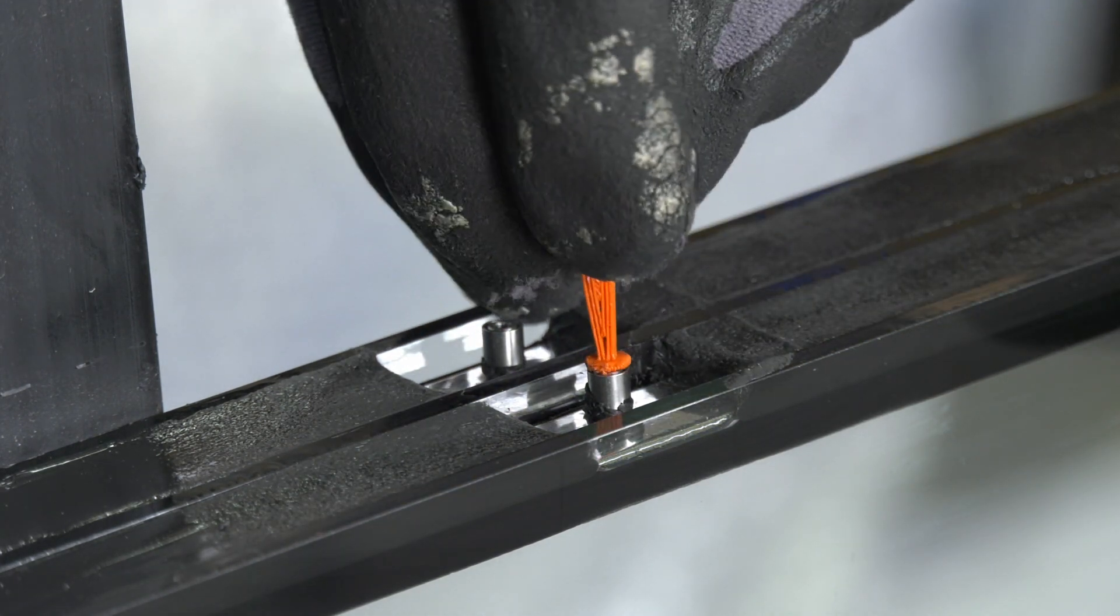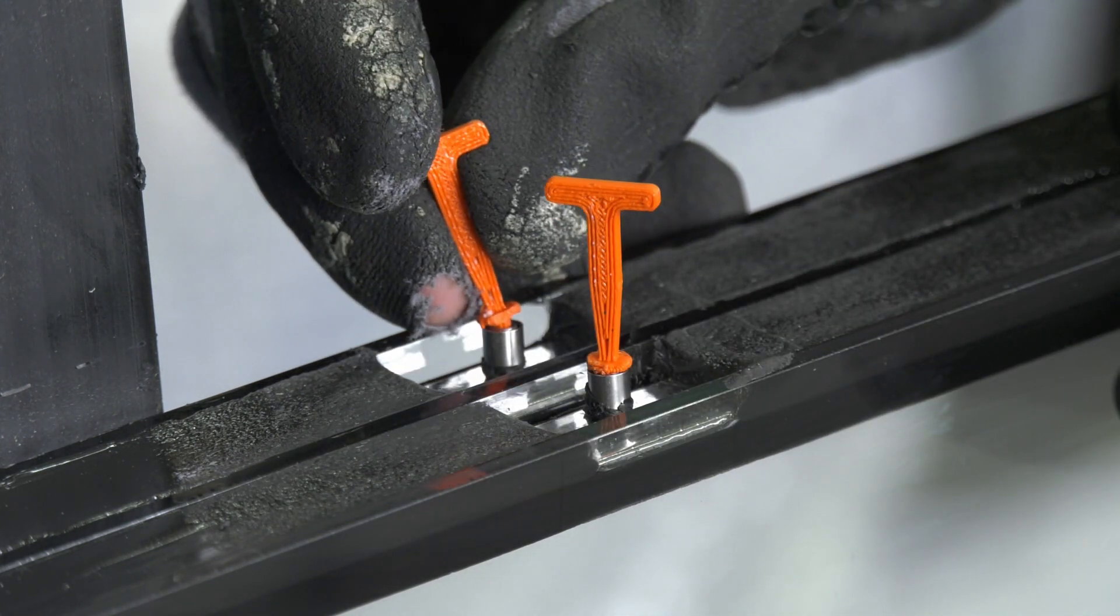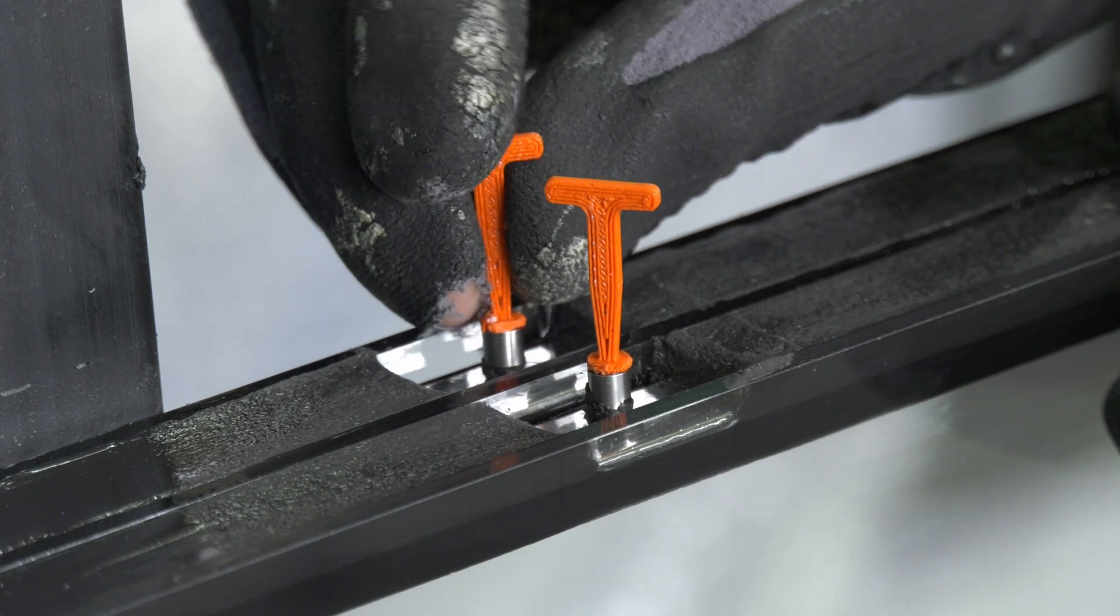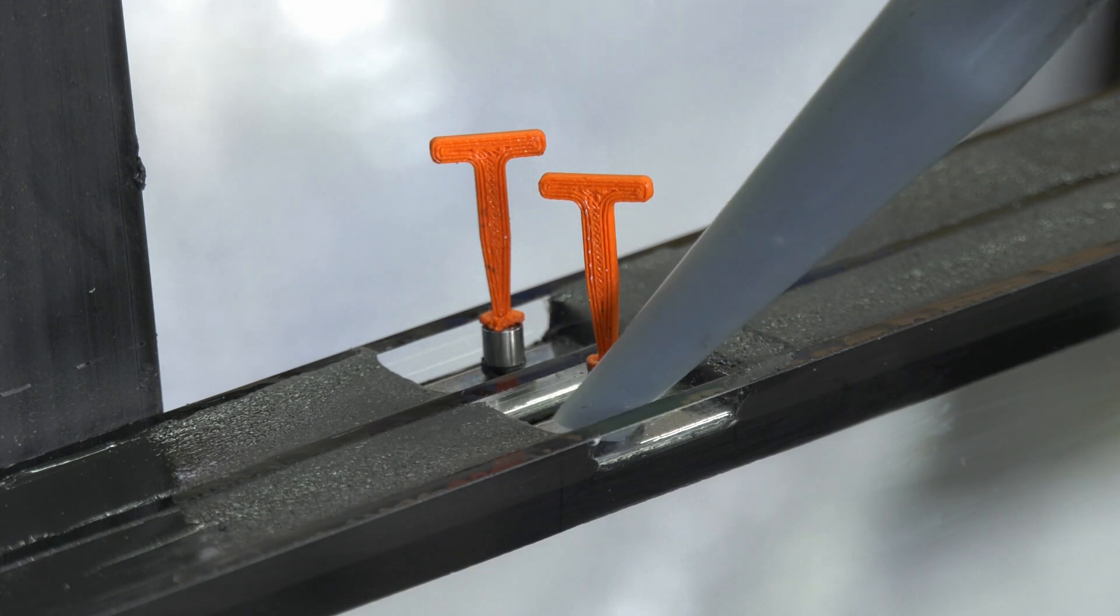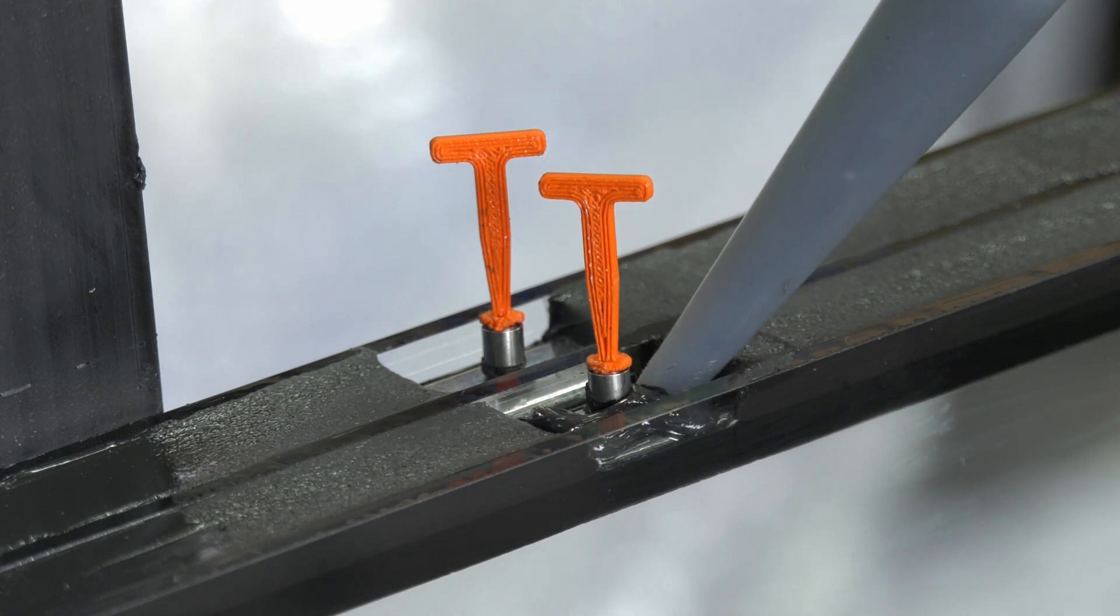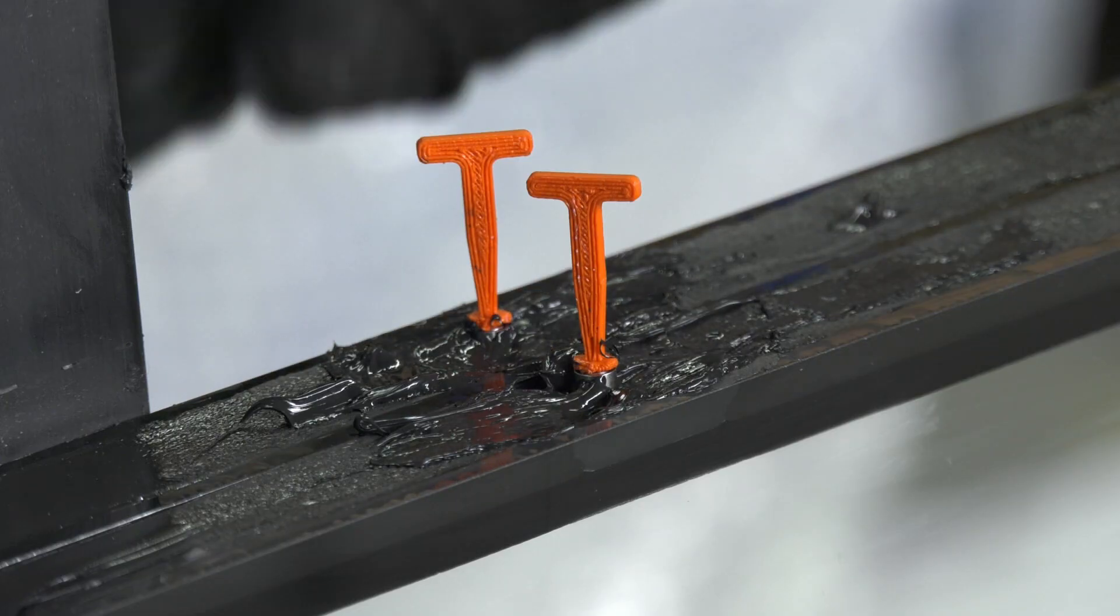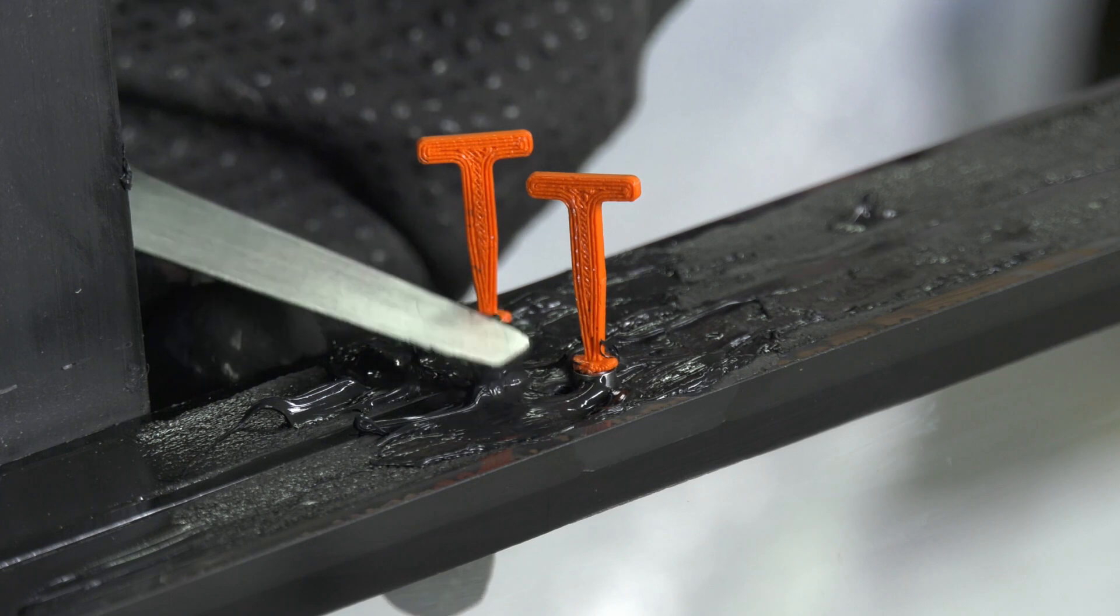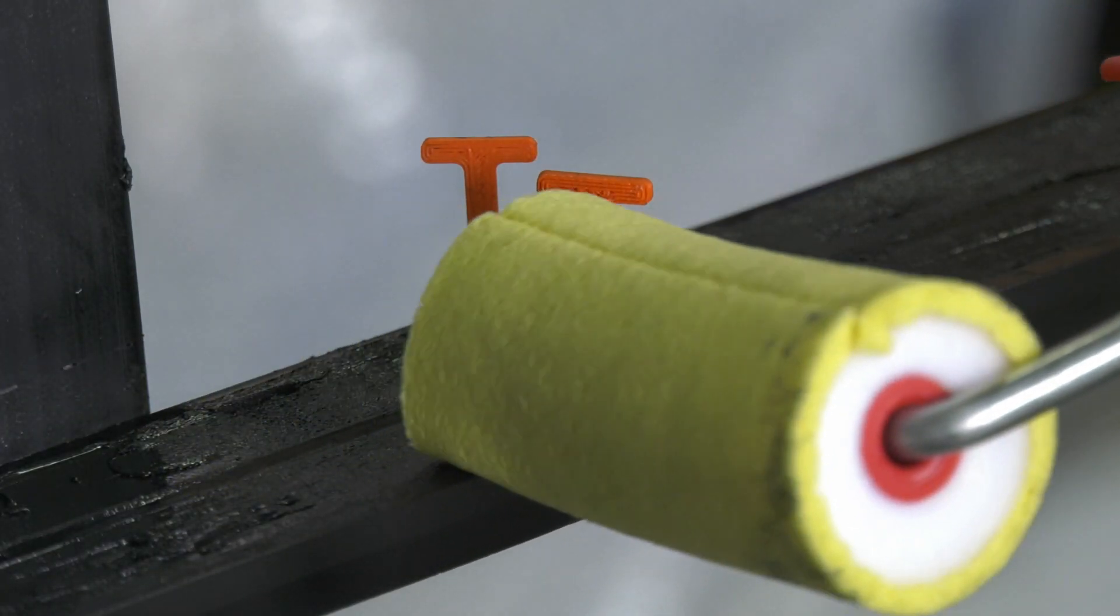The openings of the Swiss Spacer Air are blocked with stoppers. The sealant is injected around the Swiss Spacer Air. A spatula and roller are used to smooth it.